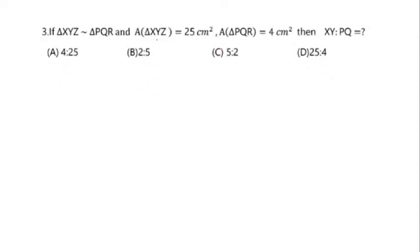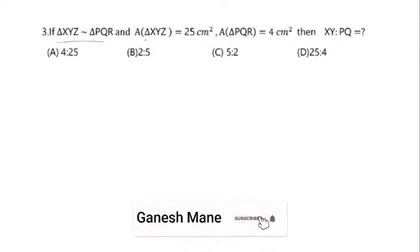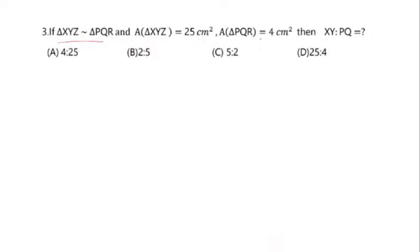The next question: if triangle XYZ is similar to triangle PQR, area of triangle XYZ is 25 cm², and area of triangle PQR is 4 cm², then what is XY to PQ? Options are: 4 is to 25, 2 is to 5, 5 is to 2, or 25 is to 4. Since both triangles are similar, we again use the same property.